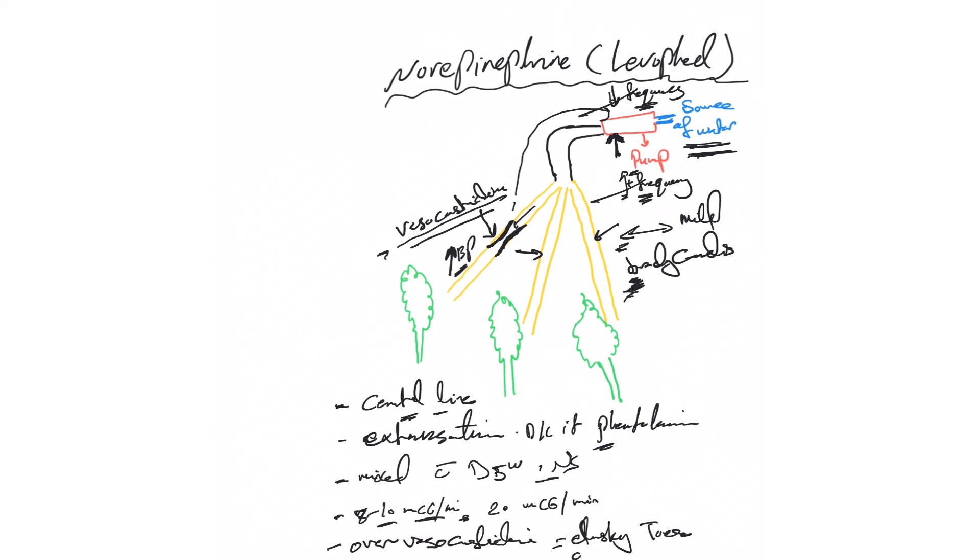Because it causes severe vasoconstriction to these organs and makes them oliguric. So because of this you want to make sure you're using the minimum amount of levofed to maintain MAP above 65.